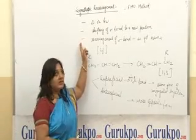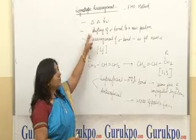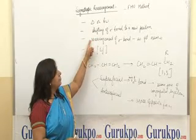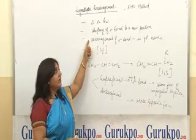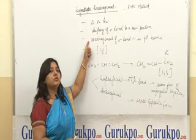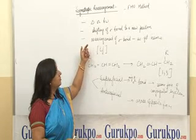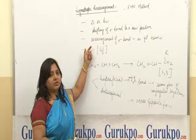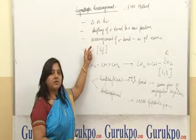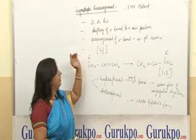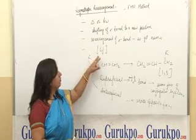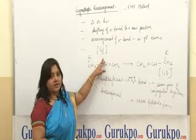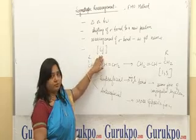These rearrangements take place either thermally or photochemically. A shifting of the sigma bond occurs to a new position, and because rearrangement of the sigma bond occurs, they are called Sigmatropic Rearrangements. We represent them using two symbols, i and j, written in this way.